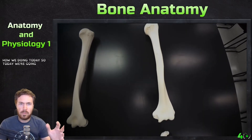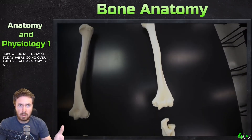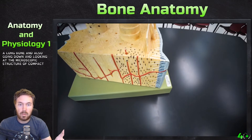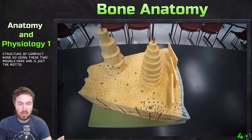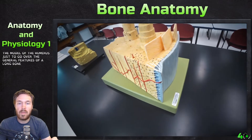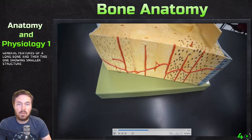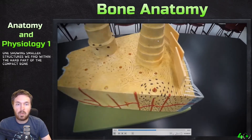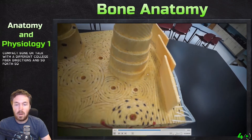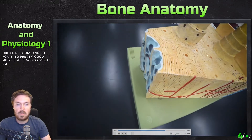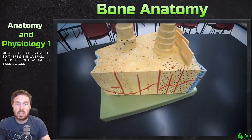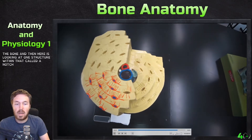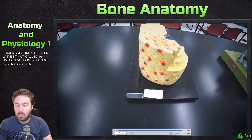Hello everyone, how are we doing today? So today we're going over the overall anatomy of a long bone and also looking at the microscopic structure of compact bones. Using these two models here — one is just the model of the humerus to go over the general features of a long bone, and then this one showing the smaller structures we find within the compact bone. We're going to talk about the different collagen fiber directions. There's the overall cross-section of the bone, and here is one structure within that called an osteon.